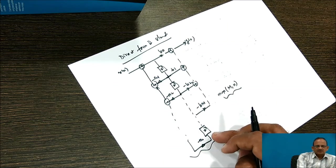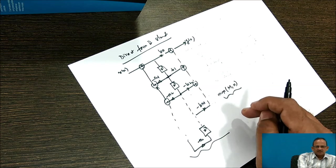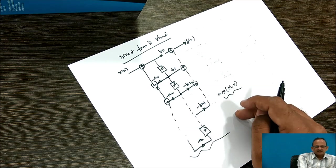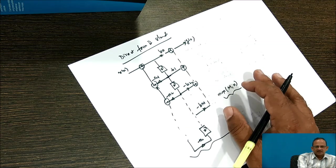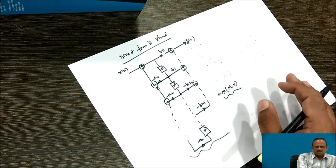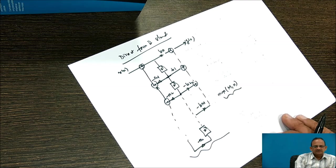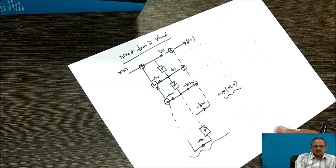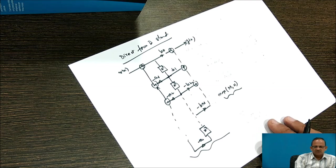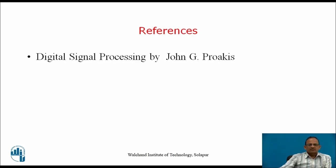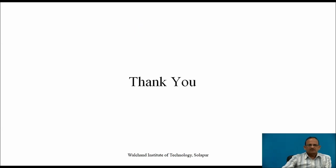This is how a given IIR system can be represented by Direct Form 1 structure and Direct Form 2 structure. Thank you.